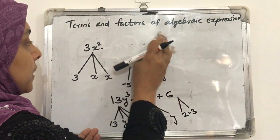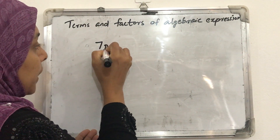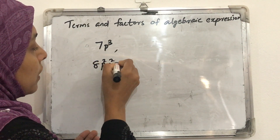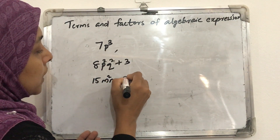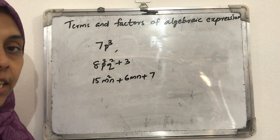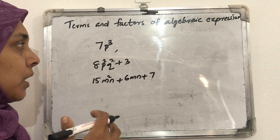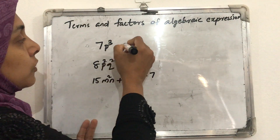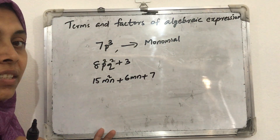Now let's consider different algebraic expressions: 7p³; then 8p²q² plus 3; and 15m²n plus 6mn plus 7. In the first expression, 7p³, there is only one term — it is not separated by any addition or subtraction sign. An algebraic expression containing only one term is called a monomial.